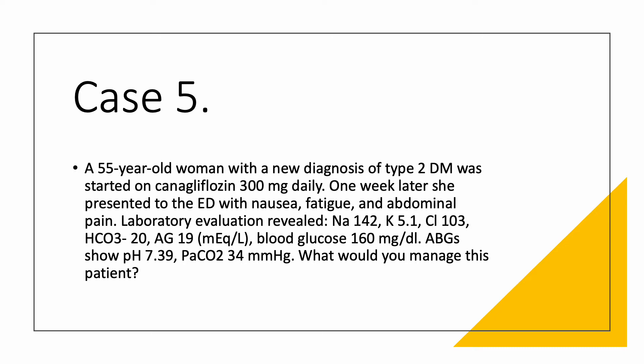Laboratory evaluation reveals normal sodium of 142, potassium 5.1, chloride 103. Bicarbonate is low at 20, but here you have a clue: anion gap is 19, which is really high. Blood glucose — not bad for a diabetic — 160. So you do ABGs because you're suspicious of the high anion gap of 19.